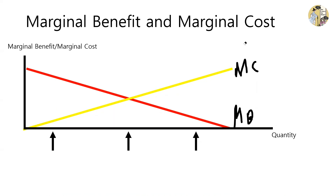You are already less thirsty, less hungry, or less needing the product. And there are three arrows on the graph, so let's take a closer look at each arrow. The first arrow refers to a point at the quantity in which the marginal benefit is bigger than the marginal cost.